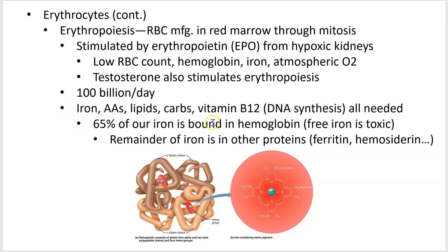Most of our iron is bound up in hemoglobin, as free iron is toxic. If you have iron atoms floating around, they're very harmful — very oxidizing, which is why they bind to oxygen. Any iron that remains is kept in storage proteins or in transfer proteins.